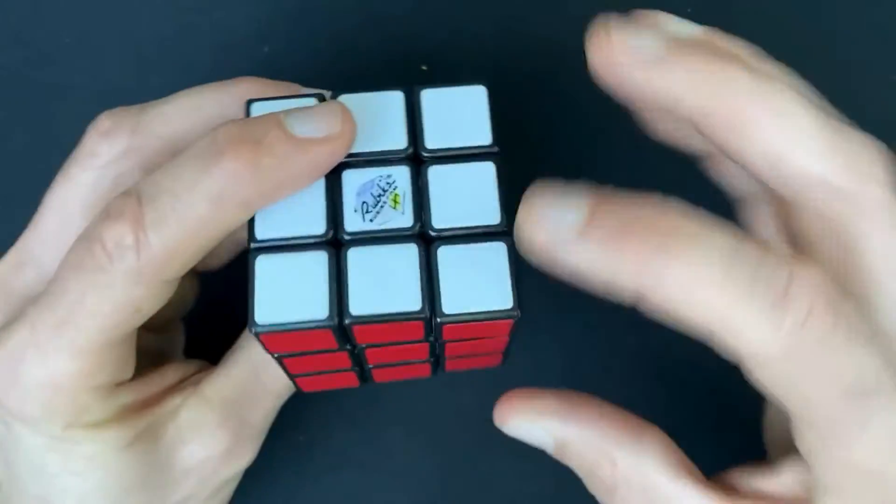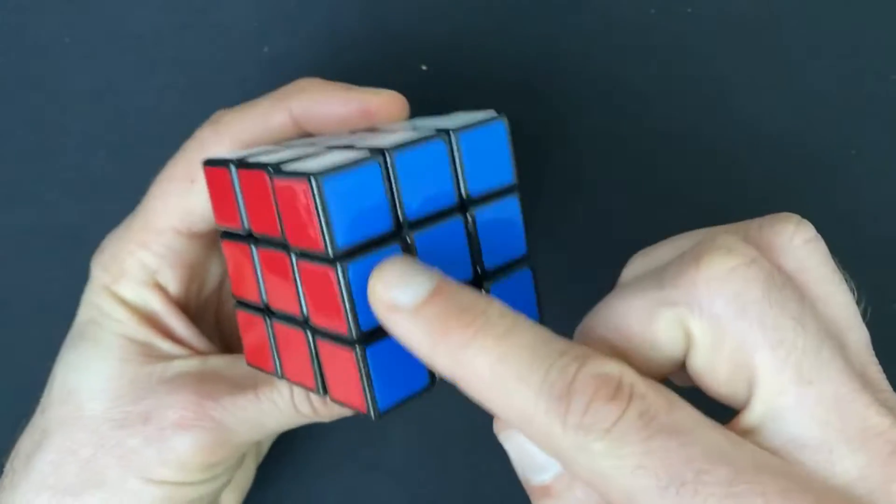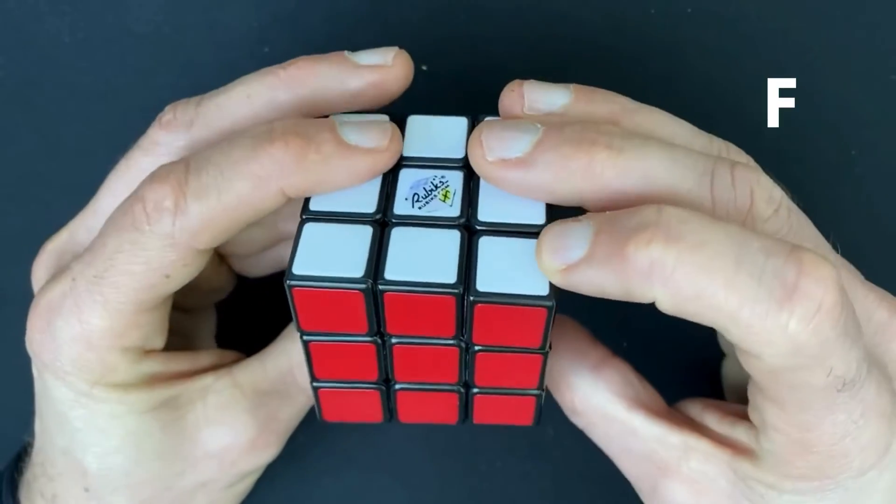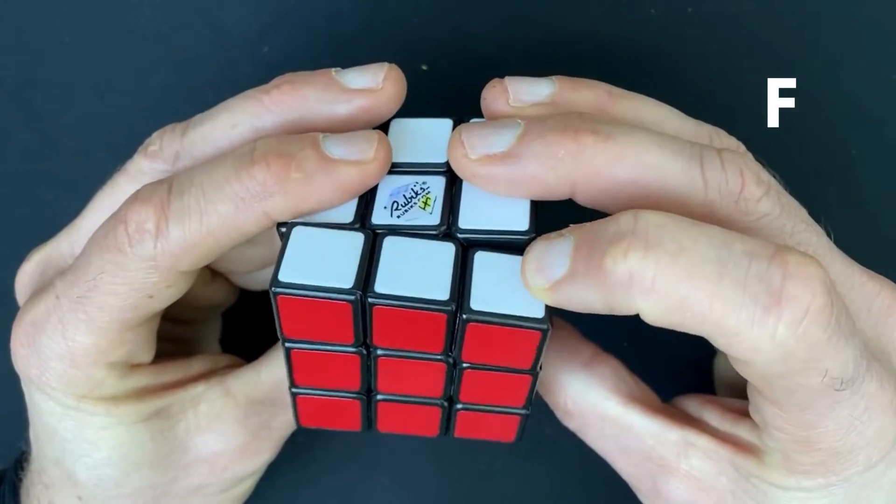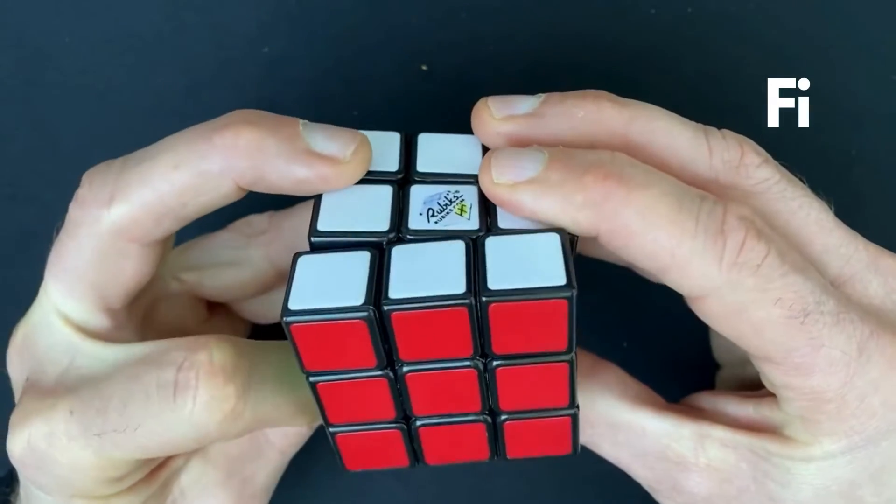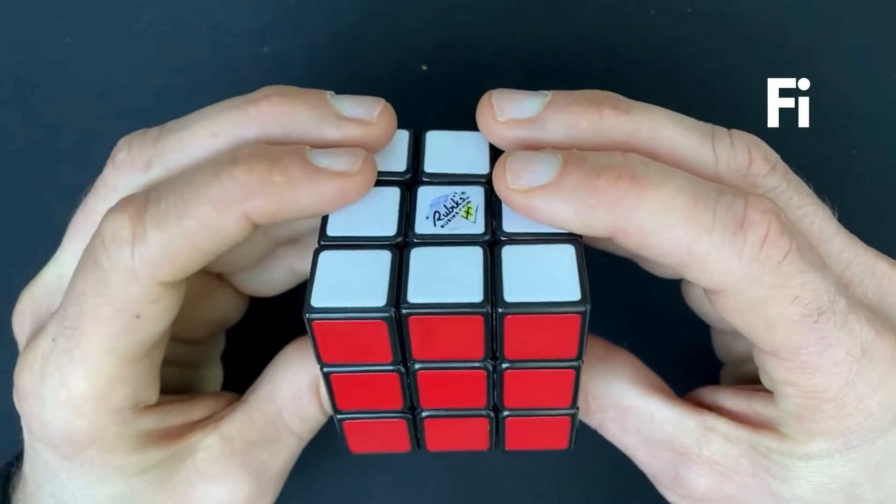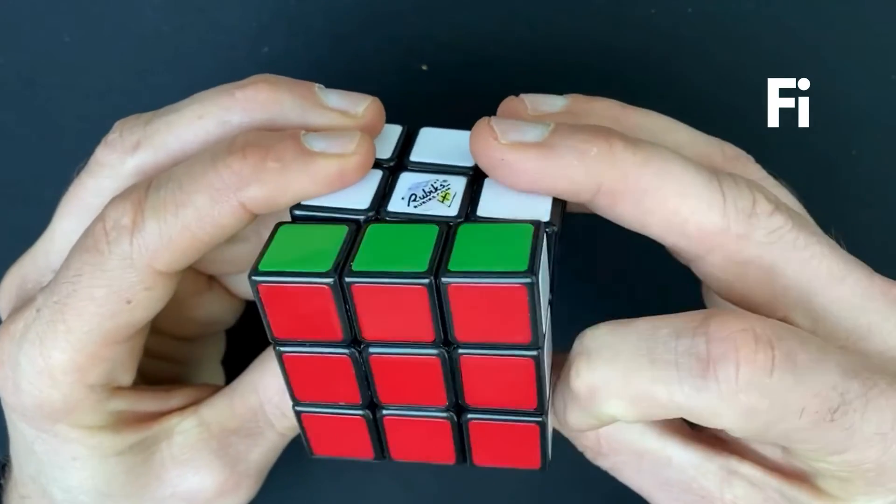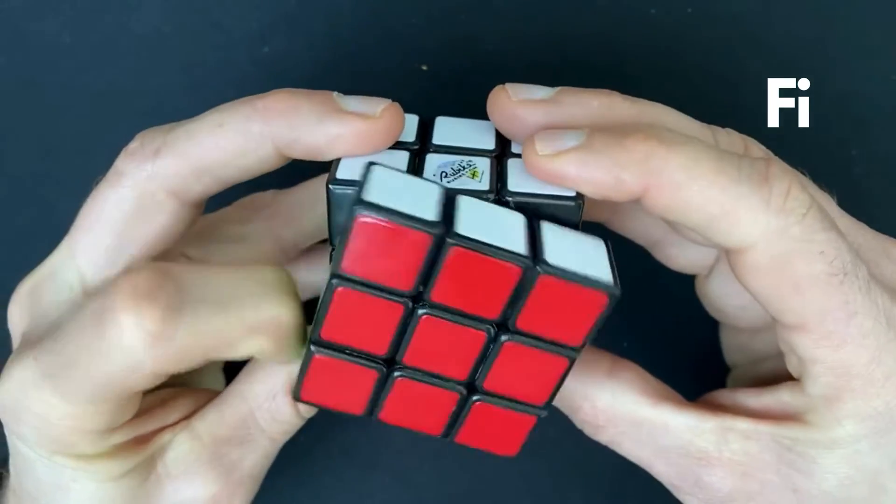Then the front layer of the cube. The front layer is an F. So front F, and front inverted, FI. F and front inverted.